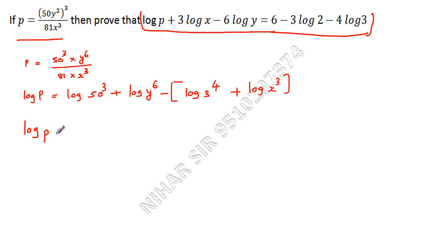Now this will be log p equals, this is 50 cube, so I can say 3 log 50. This will be 6 log y minus this will be 4 log 3. This will be minus because here I have minus so this will be minus 3 log x.